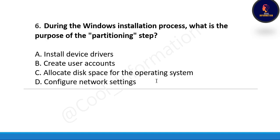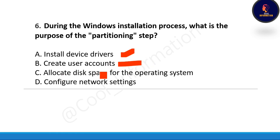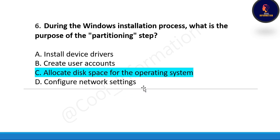Next question: During the Windows installation process, what is the purpose of the partitioning step? Option A: install device drivers, Option B: create user accounts, Option C: allocate disk space to the operating system, Option D: configure network settings. The correct option is Option C, allocate disk space for the operating system.